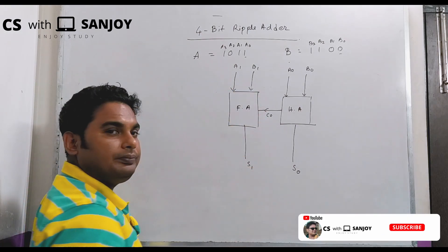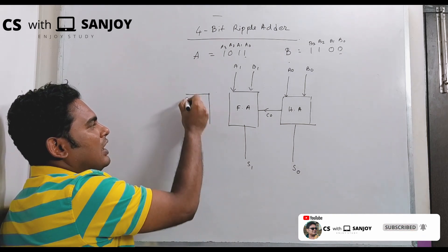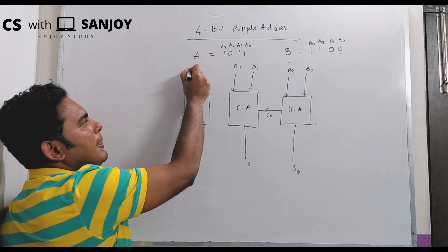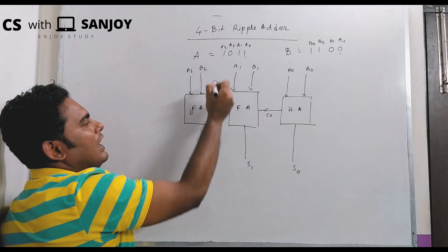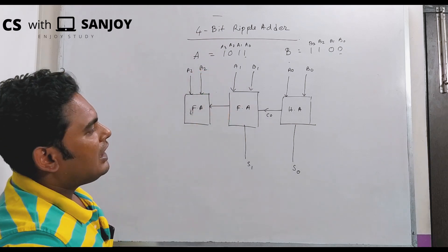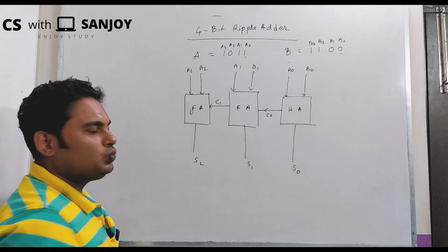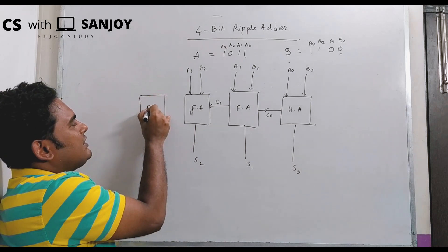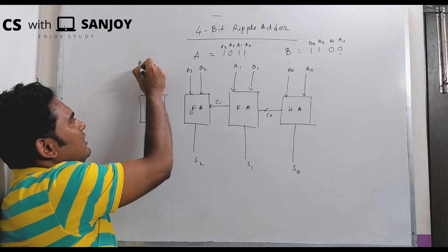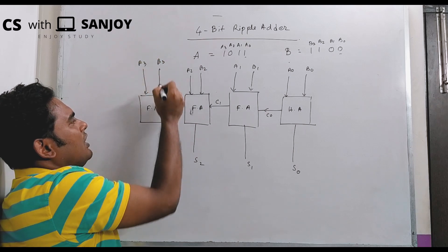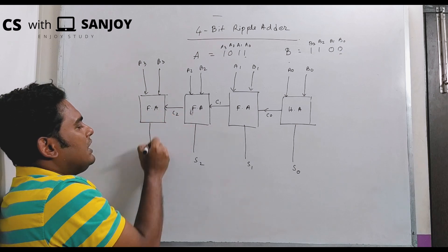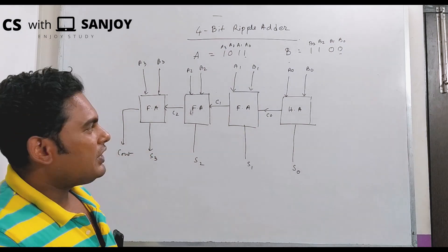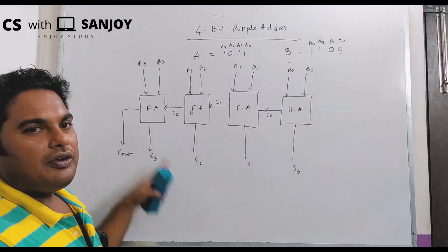The sum is s1. Then we consider this as a1, b1, c0 — add the sum is s1. Then we consider a2, b2, and c1. And finally, our next full adder is a3, b3, and c2. So this is what is called a ripple adder.